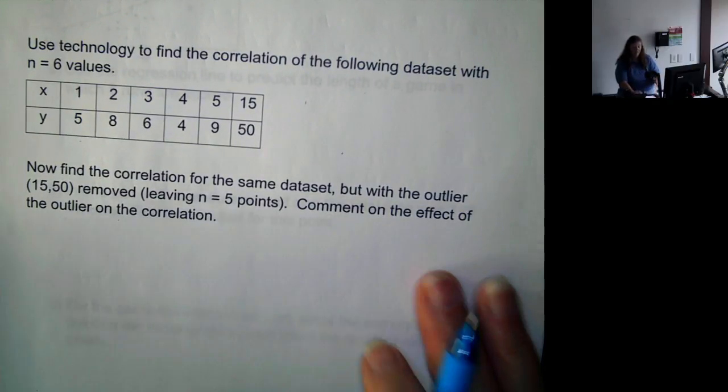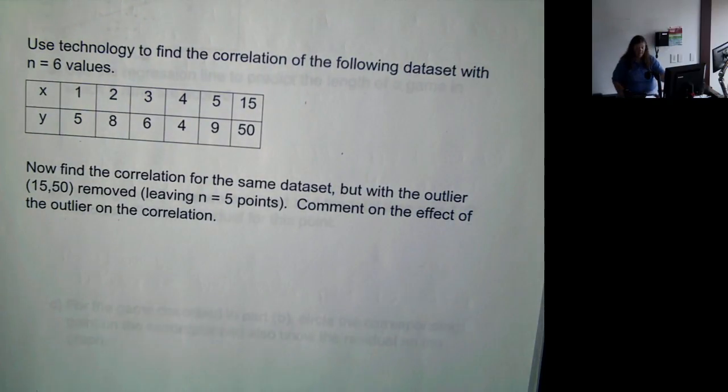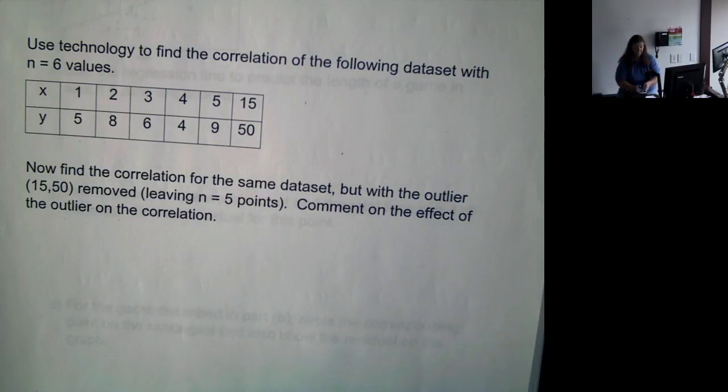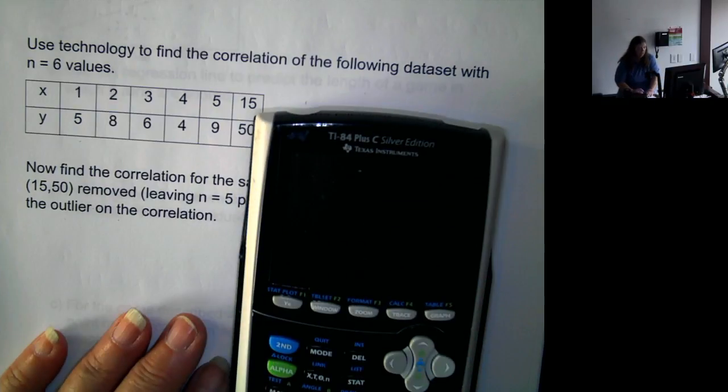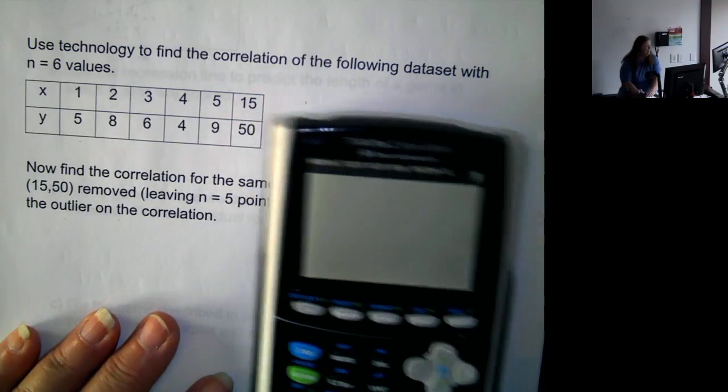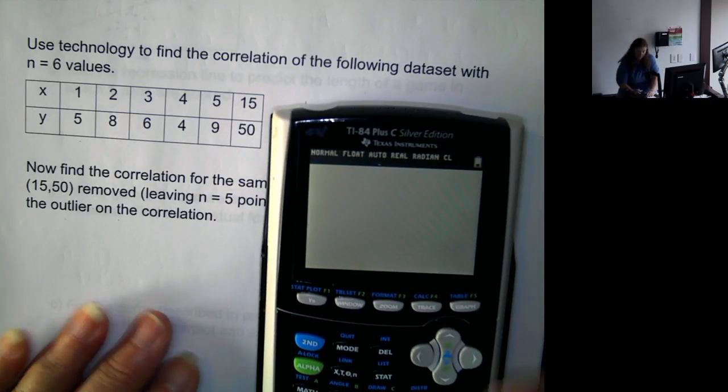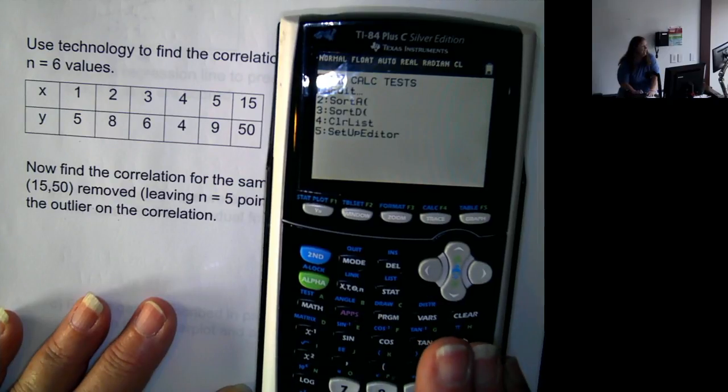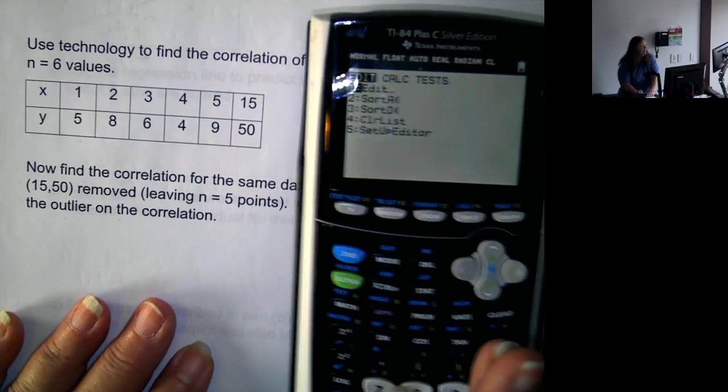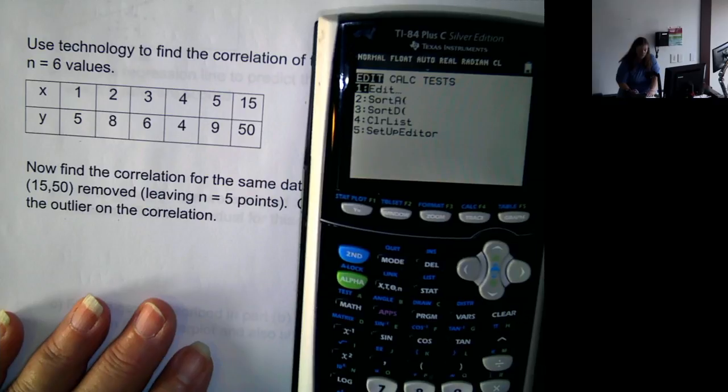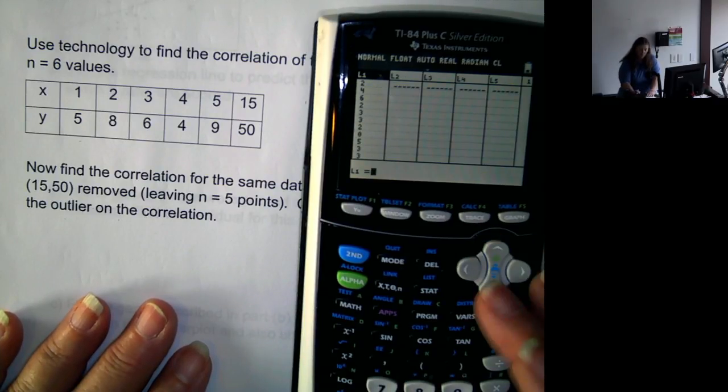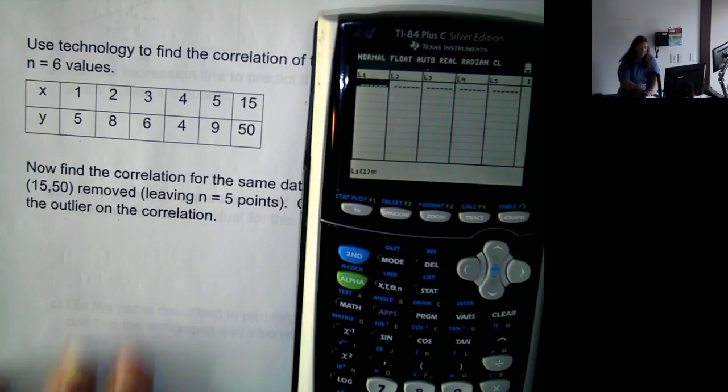Now, we want to actually find the correlation for this data set with six values. So pull out our calculator again. We're going to go to stat. We're entering these values, so we're using edit. Let's clear out what we entered before.